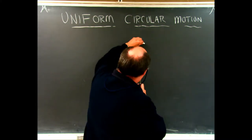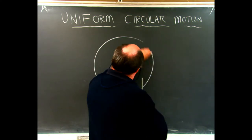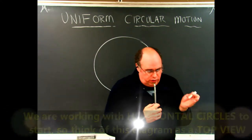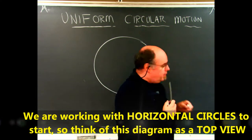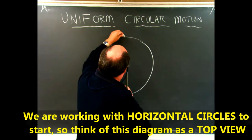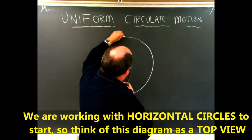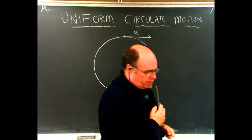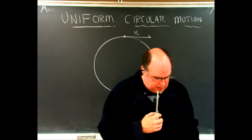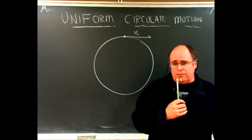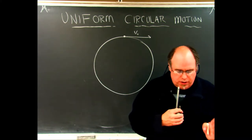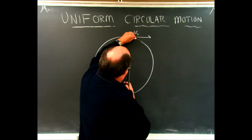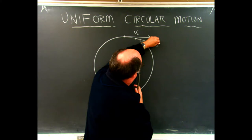As we have something going in a circle, if we looked at a vector at one point, we could say the velocity at this particular moment is v-initial. Then we could look at another moment — the velocity just a moment later would be v-final.